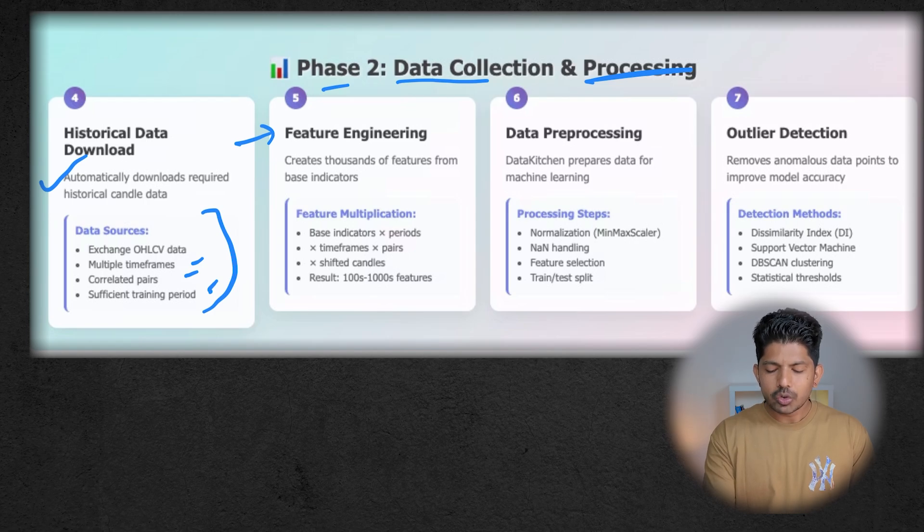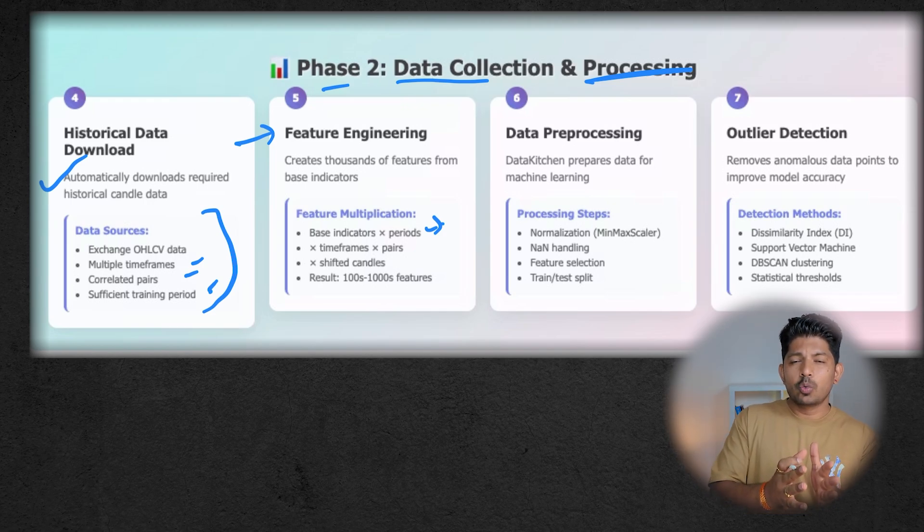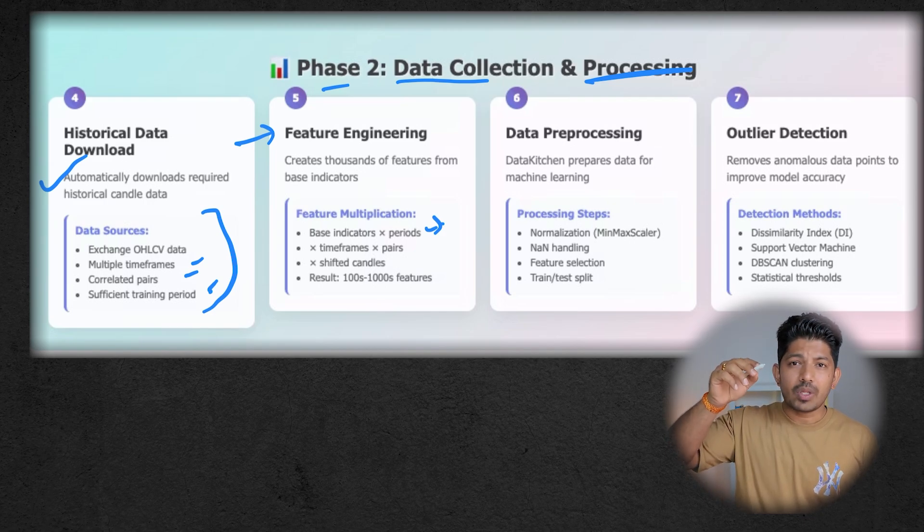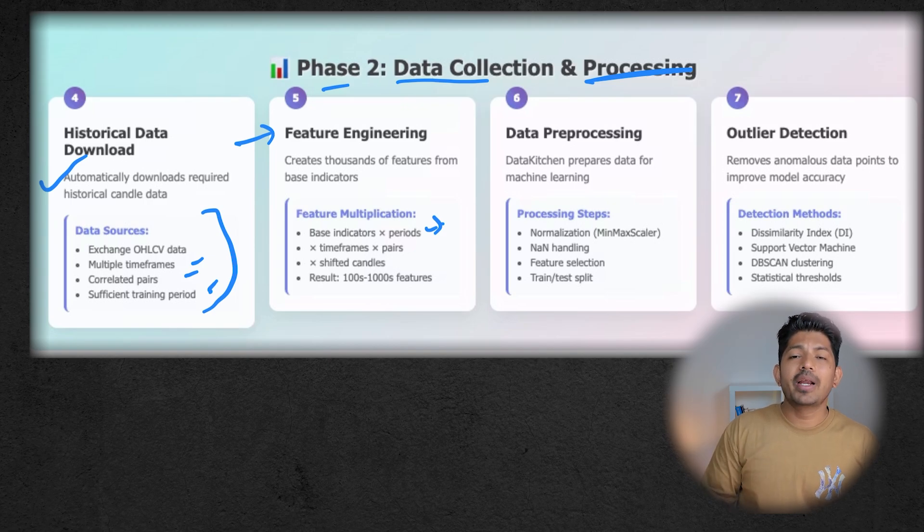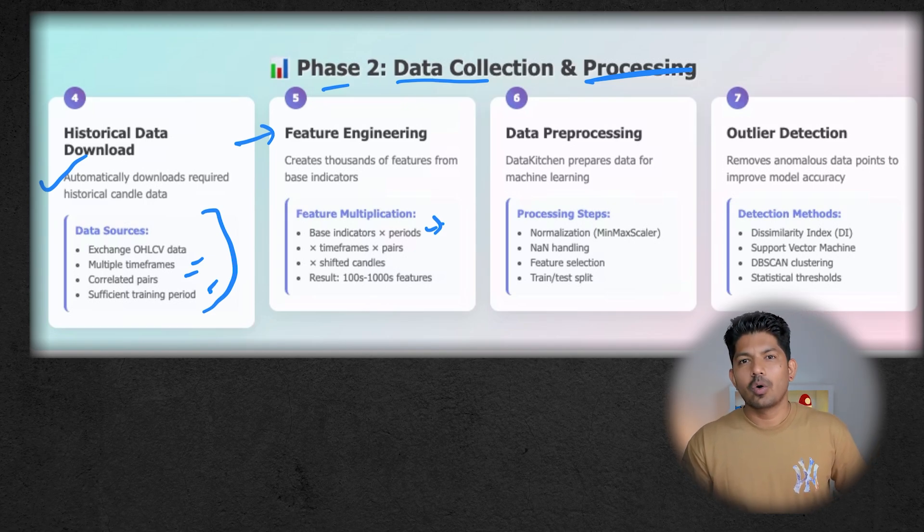Then it comes to feature engineering. It will create thousands of features from base indicators. Let's say it will create few features by multiplying the base indicators into the periods. For example, we have an indicator RSI and we have multiple time frames—five minute, one minute, 15 minutes, half an hour. It will multiply the RSI to all those time frames and create new features. What are features? In very layman terms, these are the columns in the CSV file. It will create another column for RSI 5 minutes, then RSI 15 minutes, then RSI 1 hour and 4 hours. Which means we can create thousands of features from a single OHLCV data. In OHLCV we have only five columns, but with the help of feature engineering, we'll be able to create thousands of features, and it is very helpful.